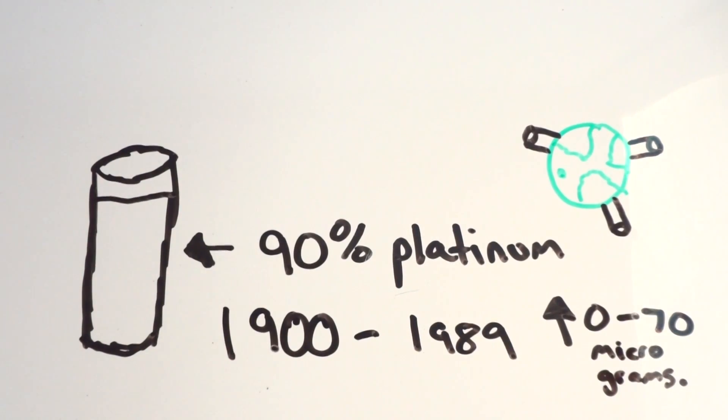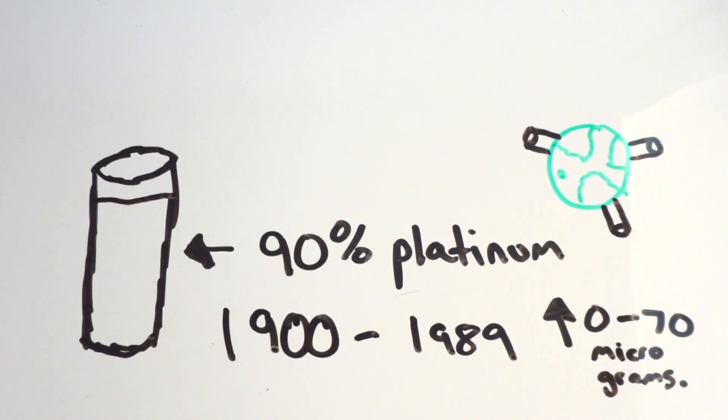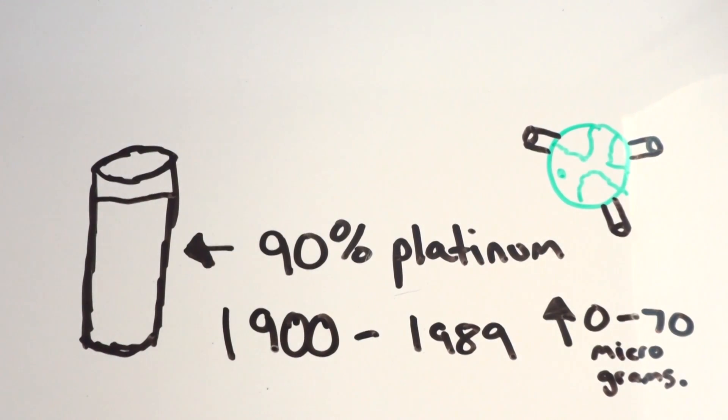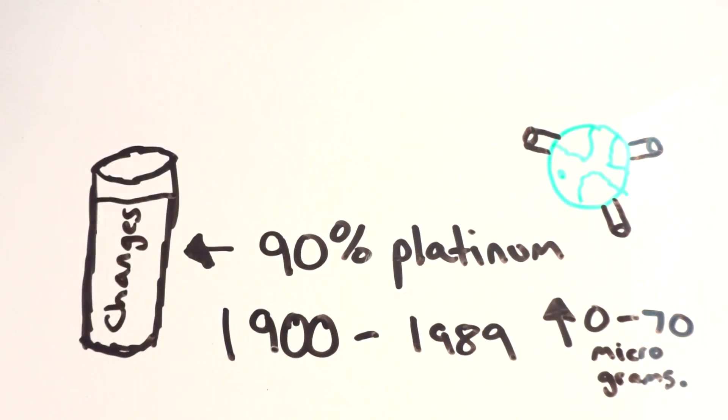Many of these copies lose and gain weight, but by small amounts. Between 1900 and 1989, some copies of the international prototype kilogram have gained between 0 to 70 micrograms. Even the original international prototype kilogram weight changes as well.